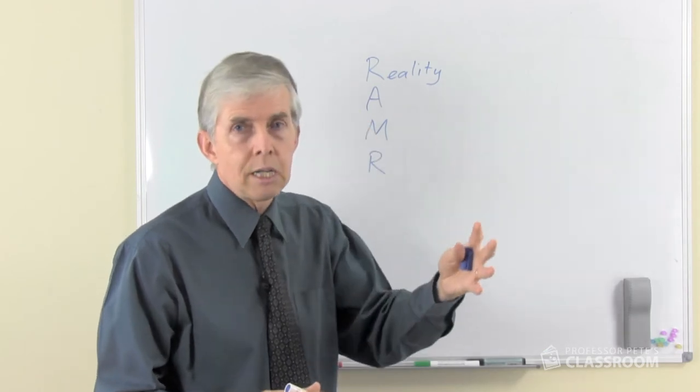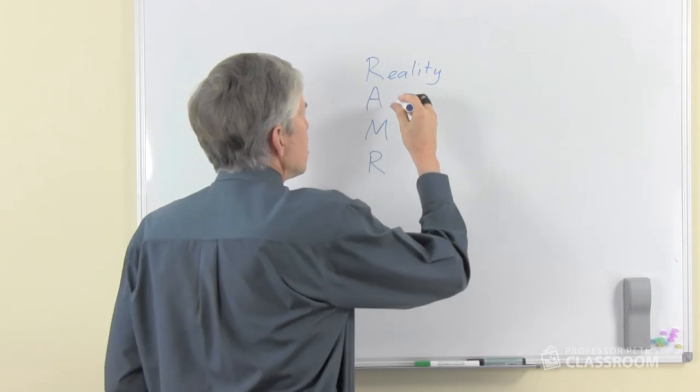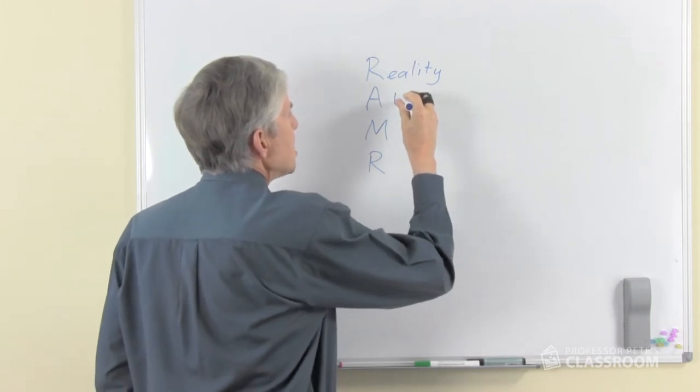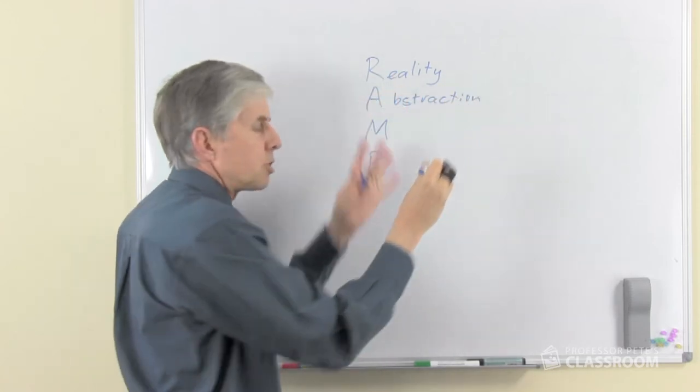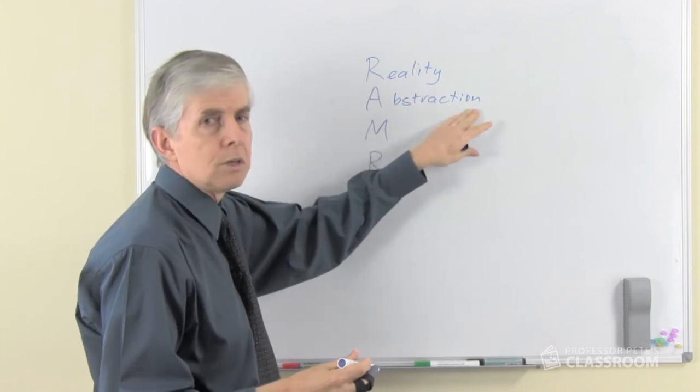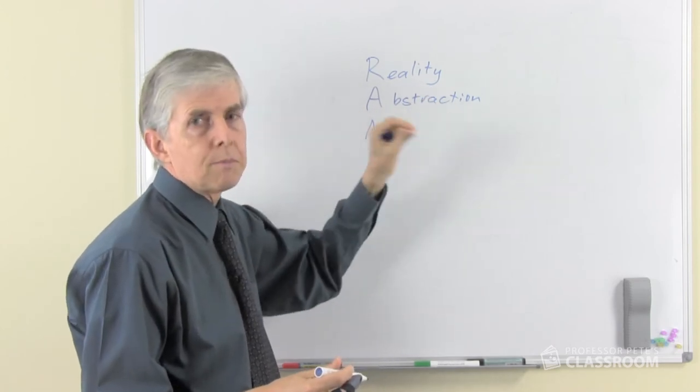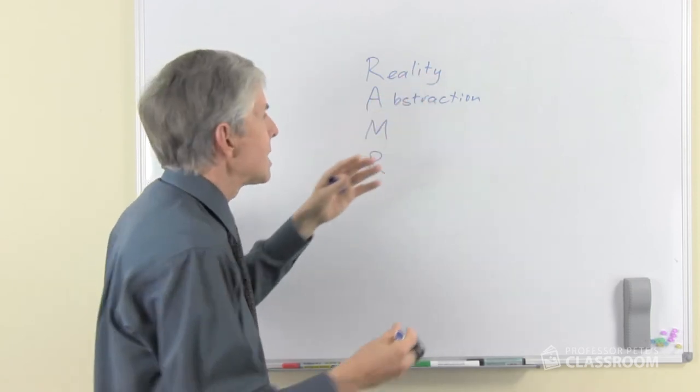Then we use a process of abstraction. So this is where we move beyond just looking at the students' reality and their culture but connecting this with the maths. We use the process of abstraction to find the mathematics in the reality and connect that.